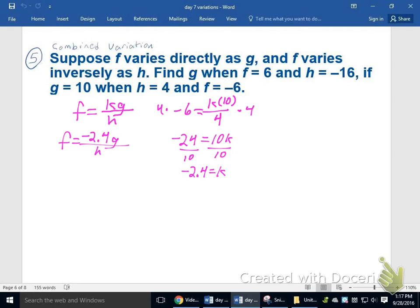And it says find g when f is 6 and h is negative 16. f is 6, h is negative 16. All right, and what's going to happen here? I would, first of all, personally just cancel the negatives right there. I would multiply both sides by 16. And if I do 6 times 16, I get 96 equals 2.4 g. I'll divide both sides by 2.4. And my final answer for g is 40.